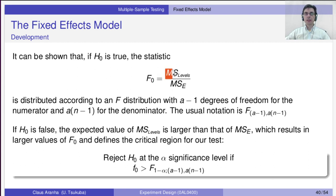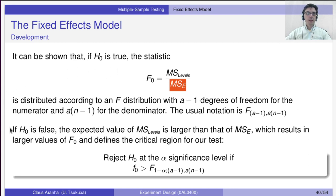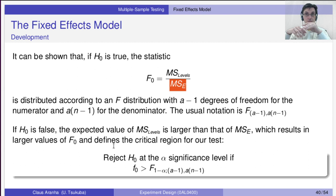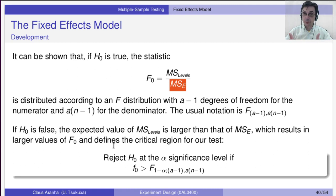The F-statistic is F0 = MS_levels / MS_error. This F statistic is distributed according to an F distribution with (a − 1) degrees of freedom. If the null hypothesis is false, the expected value of MS_levels is larger than MS_error, so F0 will be larger. We can then calculate the critical region: what F0 value corresponds to a Type 1 error probability below our confidence level alpha.